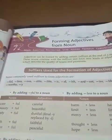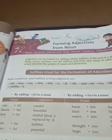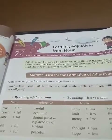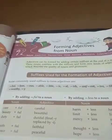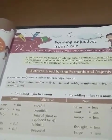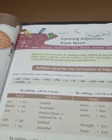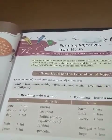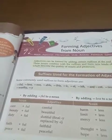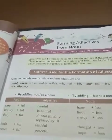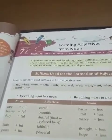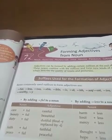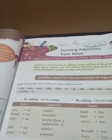First of all, let us revise what adjectives are. Adjectives are words which describe the quality of nouns and pronouns. What are suffix and prefix? Prefix is the word which we add before a word, and suffix is the word which we add at the end of a word.